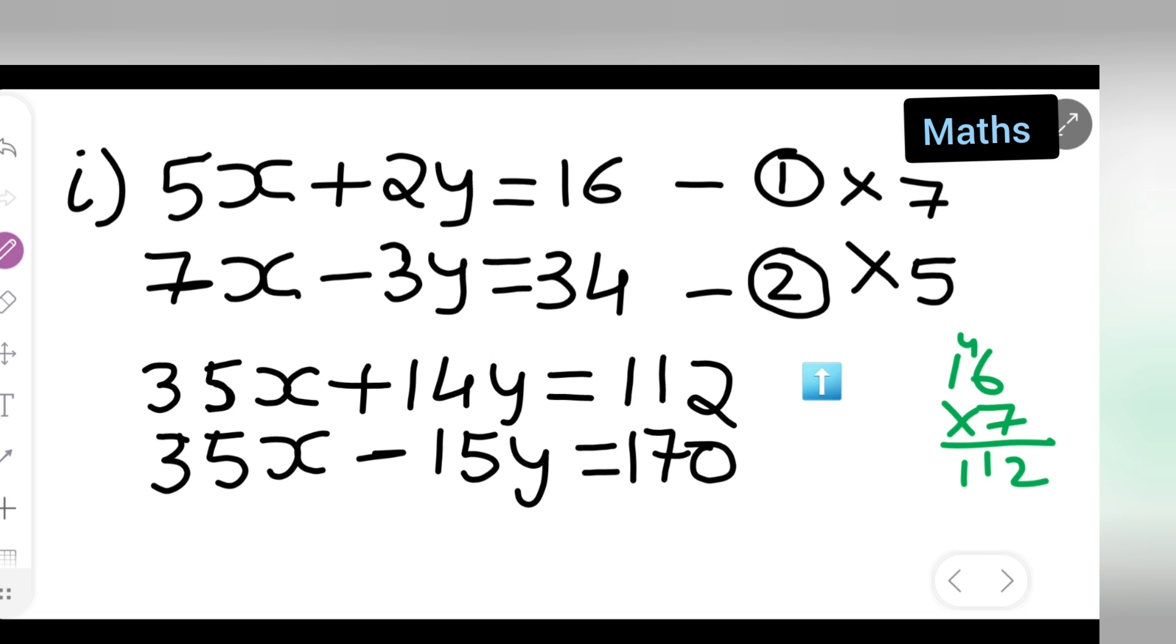Next what I will have to do is, now here sign will change minus. This minus will turn into plus and here it will be minus. So now we can cancel the first term. We have to add this 2. 15 plus 14 will give you 29. 29y is equal to minus. So sign of the greater number. So 170 minus 112 if you all do what you all are going to get is.